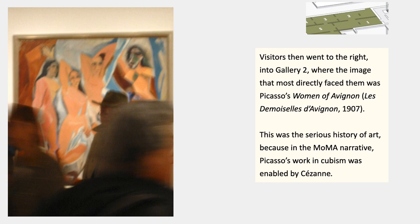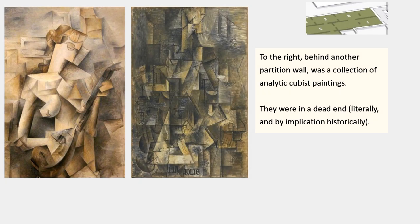But the serious narrative — the narrative that MoMA wanted to foreground — continues off into gallery number two. Because as soon as you passed the Cézanne Bather and stood opposite it, you would be able to look directly into gallery two. And Picasso's Women of Avignon from 1907 would be the image that you saw, positioned right there. So you'd see it directly as soon as you passed the Cézanne Bather. This was the serious history of art, because in the narrative associated with MoMA, Cézanne leads directly to Picasso, and this work is in the years immediately before Cubism.